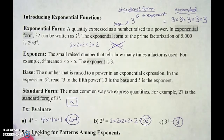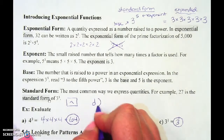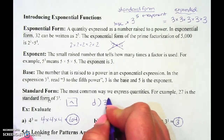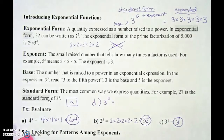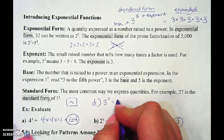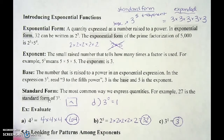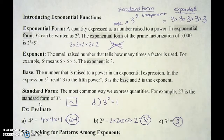Two other notes: 3 to the 0 power is actually 1. We'll explain why in tomorrow's lesson. Just start with knowing today that anything to the 0 power is always 1. So I could take 100 to the 0 power and I'd still get 1.